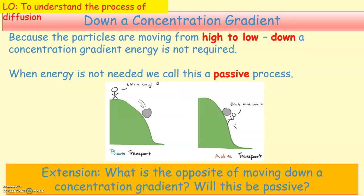Think of rolling from the top of a slope — you require no energy to roll down, so we say it is passive. Because we are moving from high to low concentration, down a concentration gradient, energy is not required. The steeper the slope, the faster you roll down.